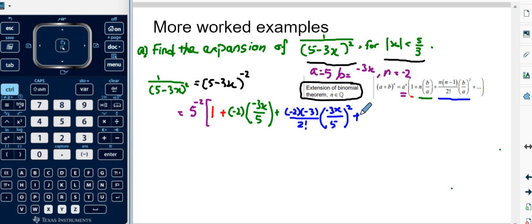And if I continue this process, the third term is negative 2 times negative 3 times negative 4 over 3 factorial, and then negative 3x, that is our b over a which is 5, raised to the power of 3 plus dot dot dot to infinity. So this is how we do the expansion and have color coded it for your convenience.